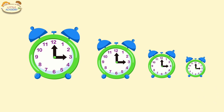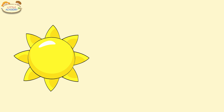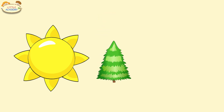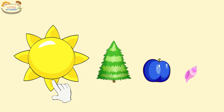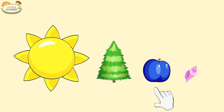Look again. The sun is large. The fir tree is smaller. The plum is even smaller. And the shell is the smallest. So this object is the largest, this one is smaller, this one is even smaller, and this object is the smallest.